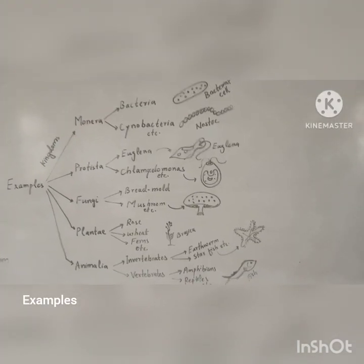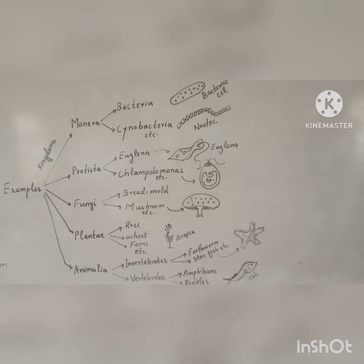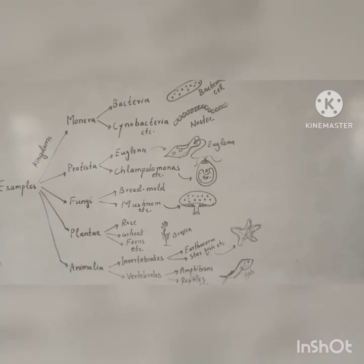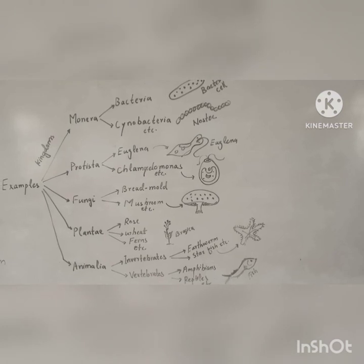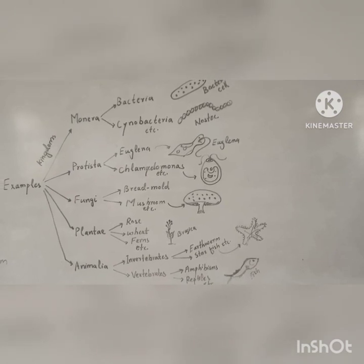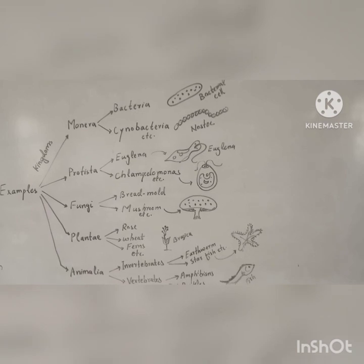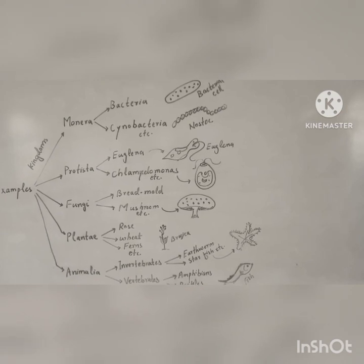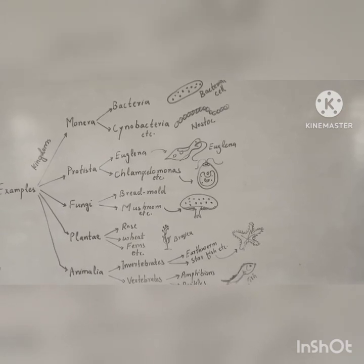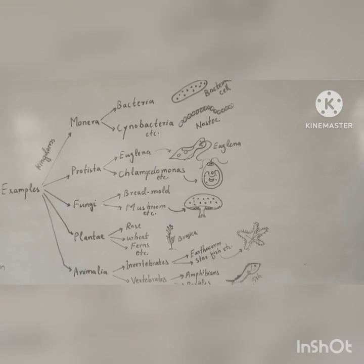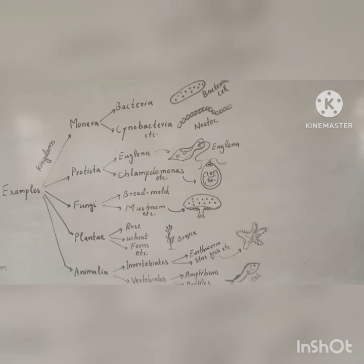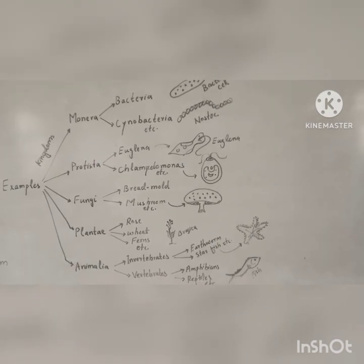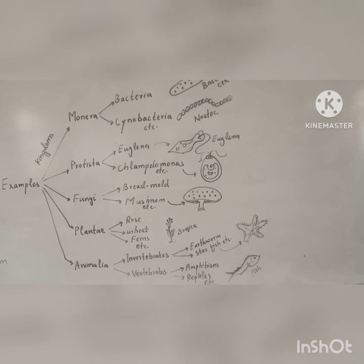Examples of the Five Kingdom System: Kingdom Monera includes bacteria and cyanobacteria. Here we can see a diagram of a bacterial cell and cyanobacteria — an example being Nostoc. Kingdom Protista includes Euglena, Chlamydomonas, and Paramecium. Kingdom Fungi includes bread mould and mushrooms.